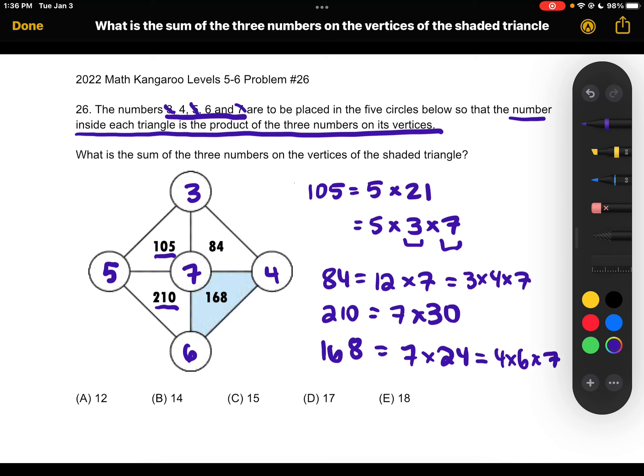So we want to know the sum of the three numbers on the vertices of the shaded triangle. So the shaded triangle is 168, so we have 7 plus 4 plus 6. So that's the sum we're finding.